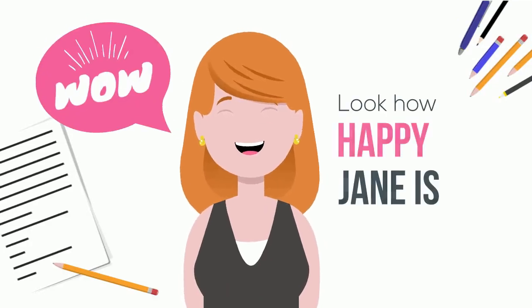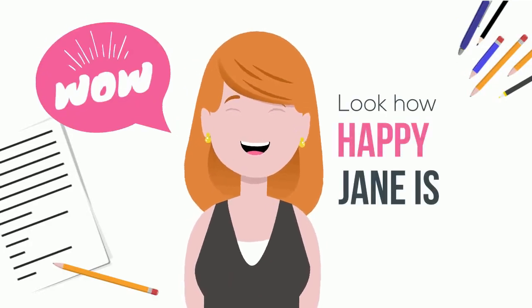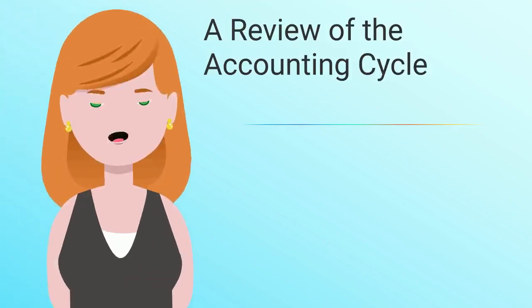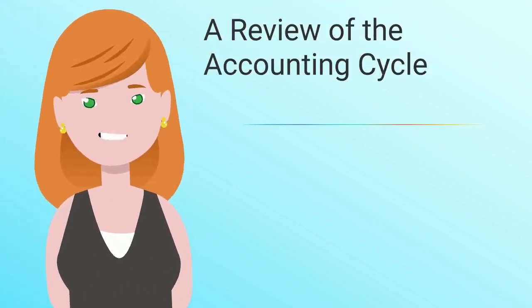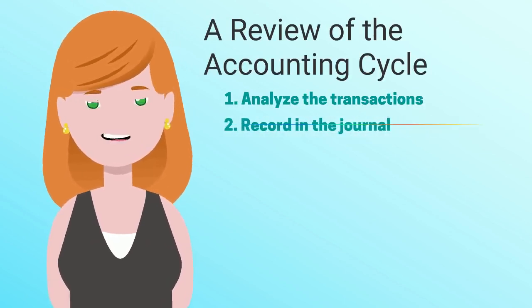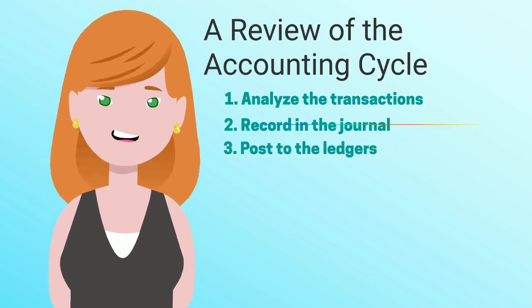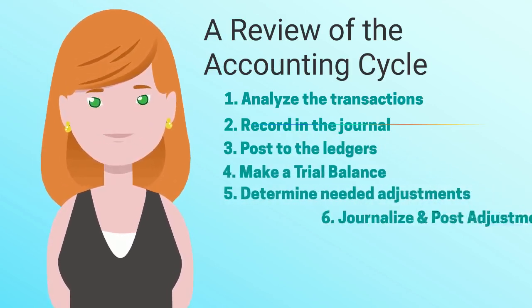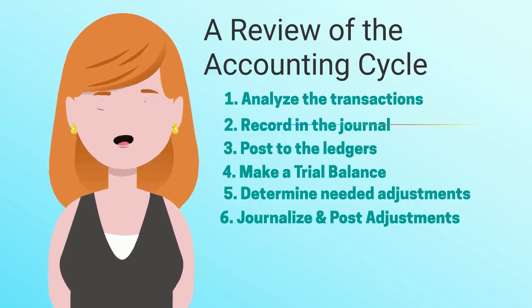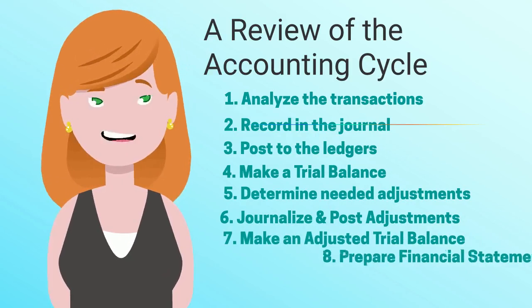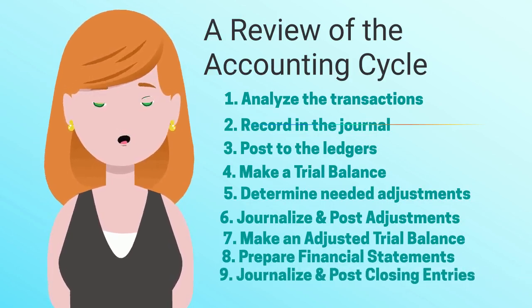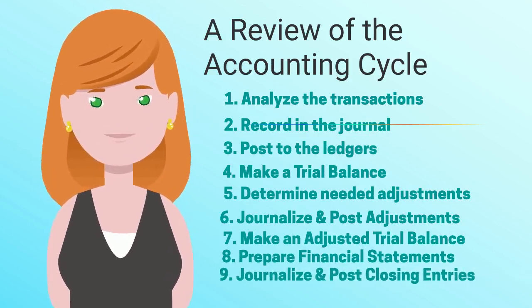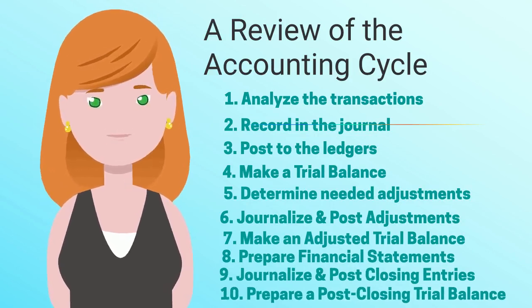Look how happy Jane is. She completed the accounting cycle. Jane is so confident in her abilities now, she would like to review the accounting cycle with you all. Number 1: Analyze the transactions. 2: Record in the journal. 3: Post to the ledgers. 4: Make a trial balance. 5: Determine needed adjustments. 6: Journalize and post adjustments. 7: Make an adjusted trial balance. 8: Prepare financial statements. 9: Journalize and post closing entries. 10: Prepare a post-closing trial balance.